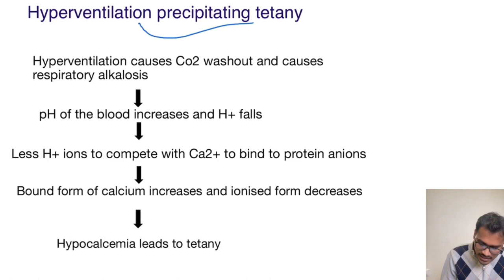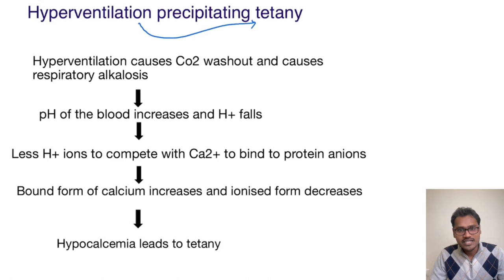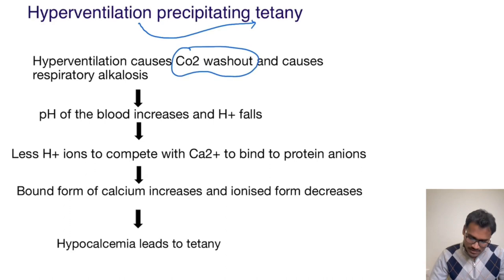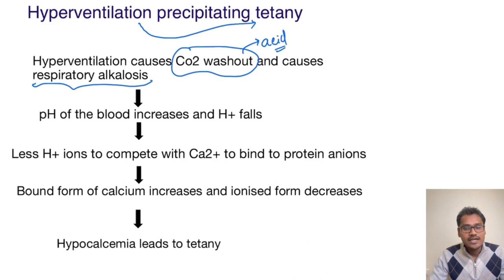Whenever a person hyperventilates, it increases the occurrence of tetany. Now, what happens in hyperventilation? Suppose a person is breathing in and out very fast — the CO2 washout increases, meaning the amount of carbon dioxide expelled increases. Since CO2 is an acid and acid is being thrown out, it will cause respiratory alkalosis. Whenever there is alkalosis, the pH of the blood increases and the H+ levels fall.